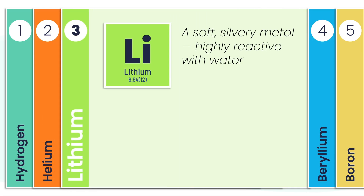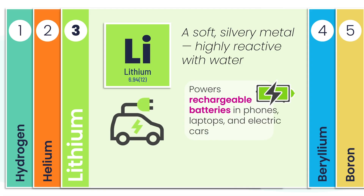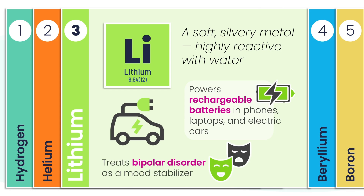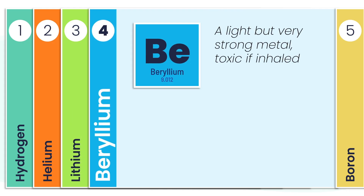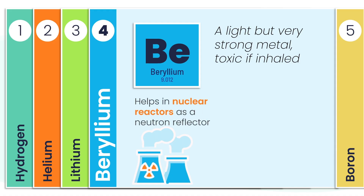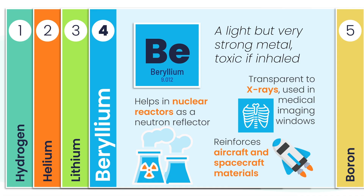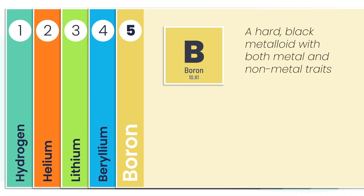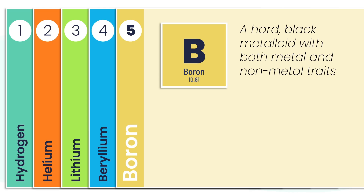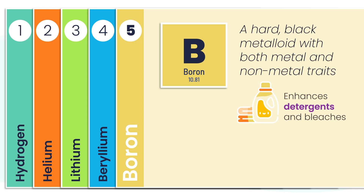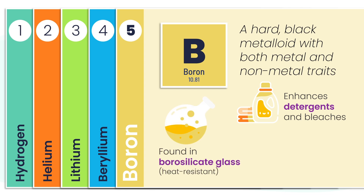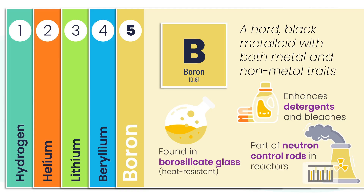Lithium is a soft silvery metal that reacts fast when it touches water. It powers our rechargeable devices, drives electric vehicles forward, and even helps stabilize moods in mental health treatment. Beryllium is a lightweight, strong metal — dangerous if inhaled, but absolutely essential in science and tech. It reflects neutrons in nuclear reactors, reinforces advanced aerospace materials, and allows X-rays to pass through during medical imaging. Boron is a tough black metalloid, part metal, part non-metal. It boosts the cleaning power of detergents, strengthens glass that can handle serious heat, and helps control nuclear reactions inside reactors.